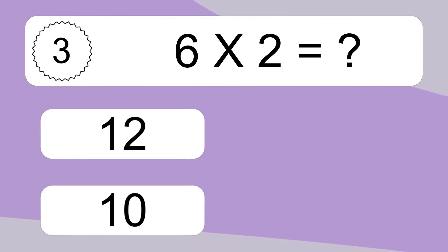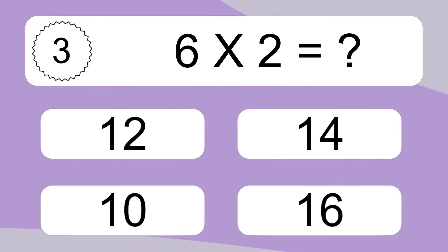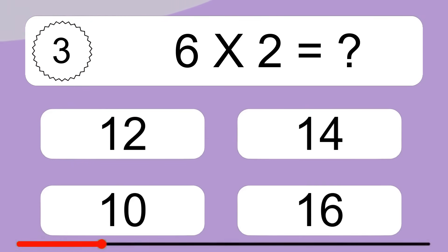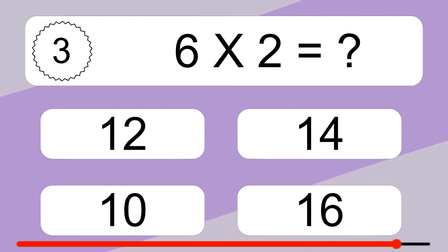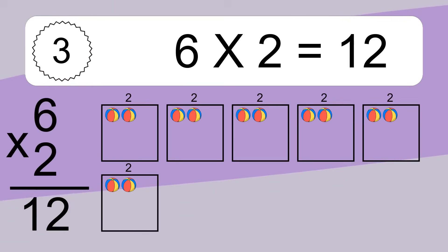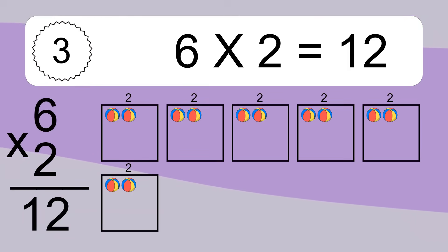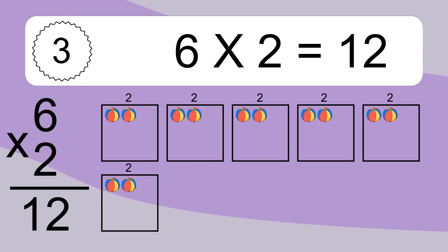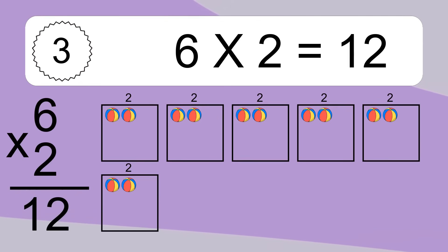Six times two equals what? Six times two equals twelve. We have six boxes, and each box has two colorful balls inside. If you count all the balls in all the boxes together, you will have six times two balls. This equals twelve balls.